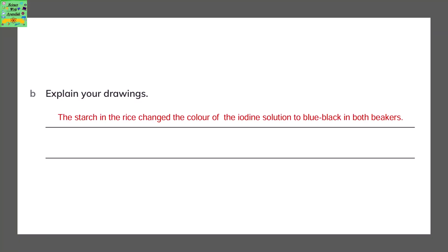Explain your drawings. The starch in the rice changed the color of the iodine solution to blue-black in both beakers.